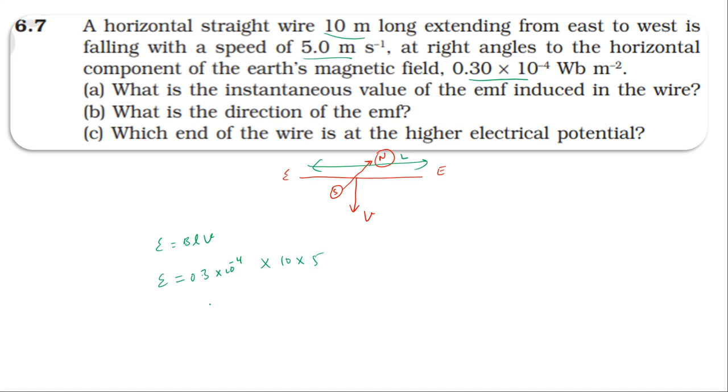This is simple - 1.5 × 10^-3 volt. Using Fleming's right hand rule: thumb finger for velocity direction, four fingers for field direction.